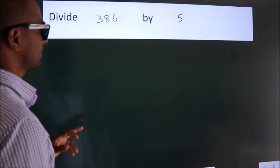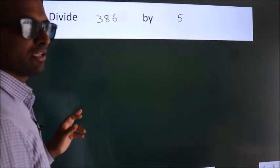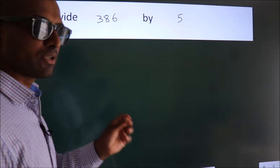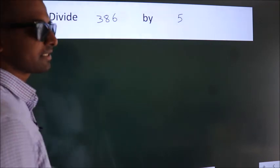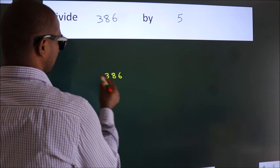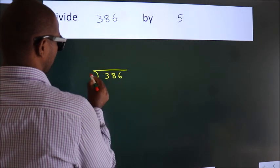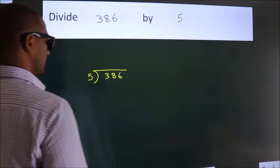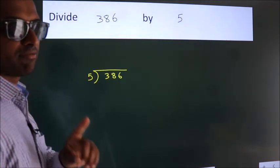Divide 386 by 5. To do this division, we should frame it in this way. 386 here, 5 here. This is your step 1.